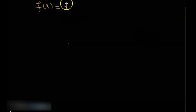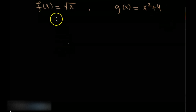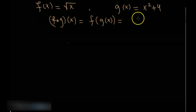Similarly, here is another example. f(x) = √x and g(x) = x² + 4. First we find f∘g — you compose g into f and you get √(x² + 4).